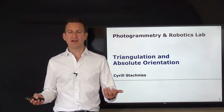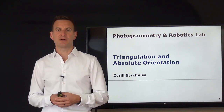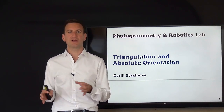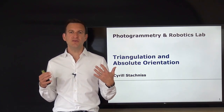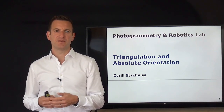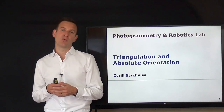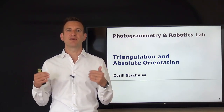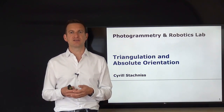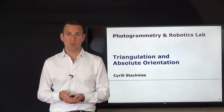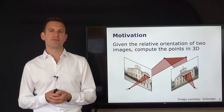Consider you have a stereo pair and you have corresponding points, so you can extract or estimate the relative orientation of the two cameras — you know where one camera sits with respect to the other. What we now want to do is use this information to estimate something about the scene: the 3D location of points in the world. So having a simple way for estimating the 3D location of points in the environment given the relative orientation of our cameras.